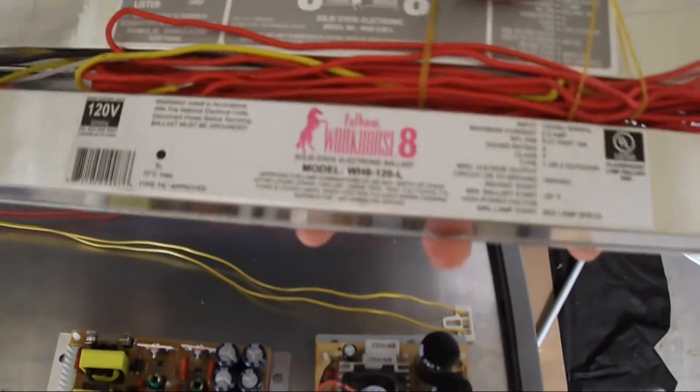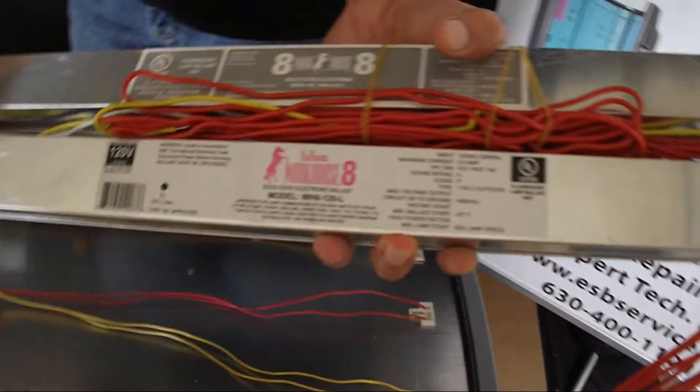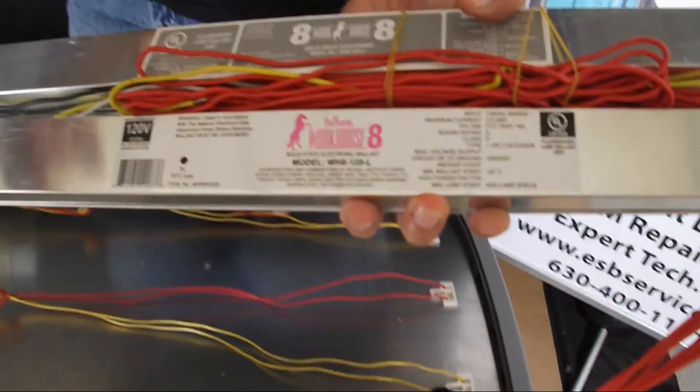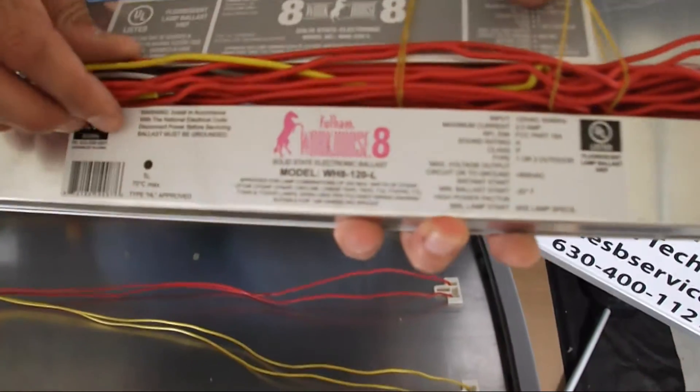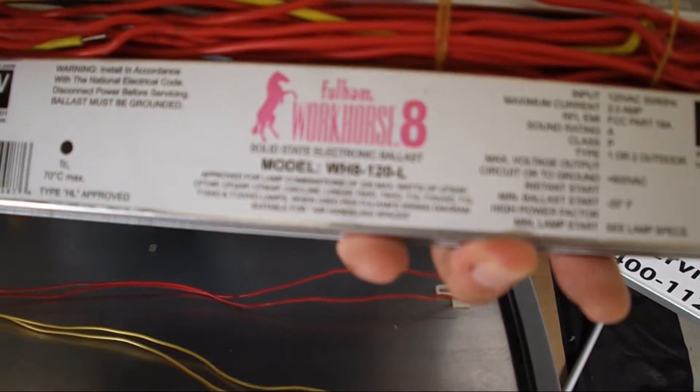So, there are other versions of this ballast, like I said, because you're going to have 240 volt, 120 volt, two-lamp, three-lamp, and four-lamp versions. Even, like I said, even six-lamp versions. But basically, they all look like this.